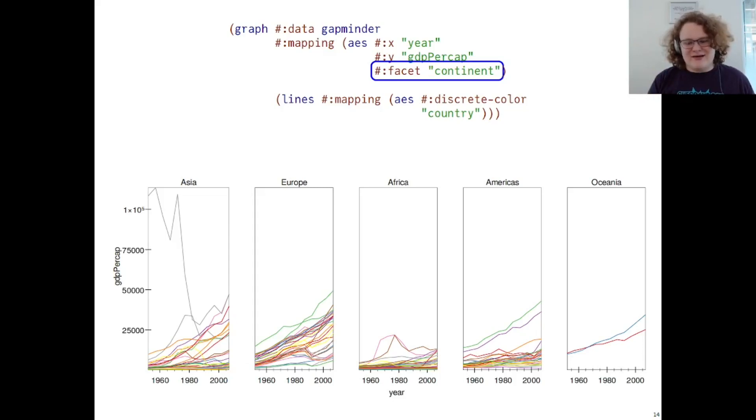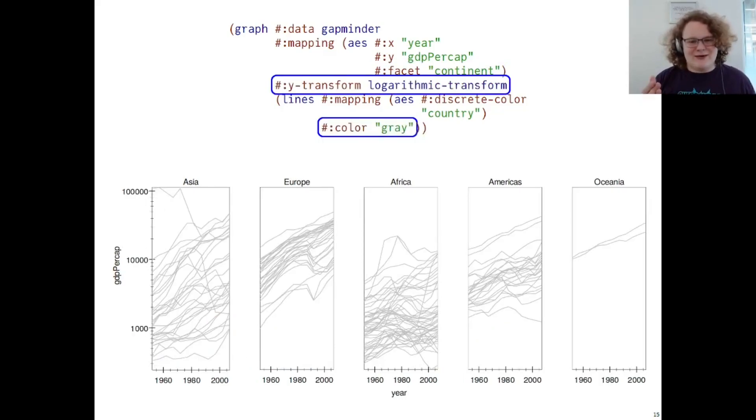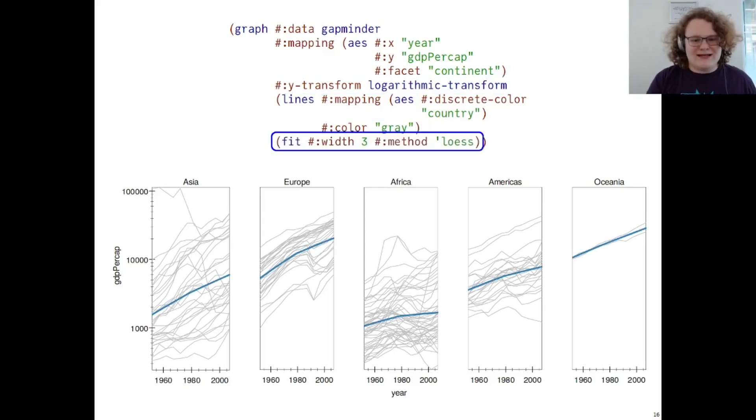Namely, a bug in the dataset involving the GDP per capita statistics for Kuwait makes the y-axis really wonky, and also we have this giant mess of color. If we're lazy and we don't want to mess with the aesthetics, we can then just map the color to gray, and then add a logarithmic transform to the y-axis to mitigate the bug involving Kuwait. Then, we can add a fit line to each individual subframe, and we're off to the races. We now have a reasonable idea of how GDP per capita progressed over time in each continent.